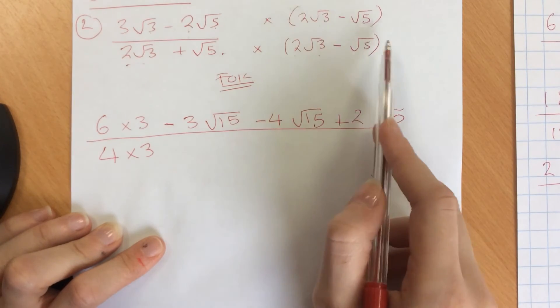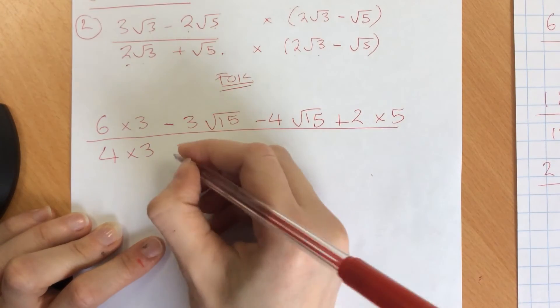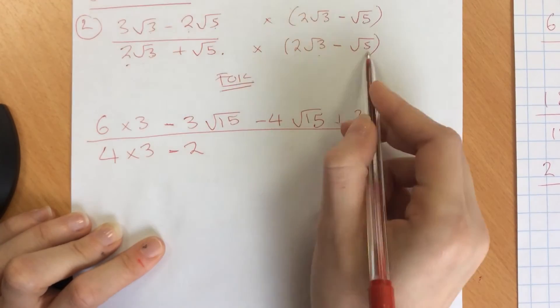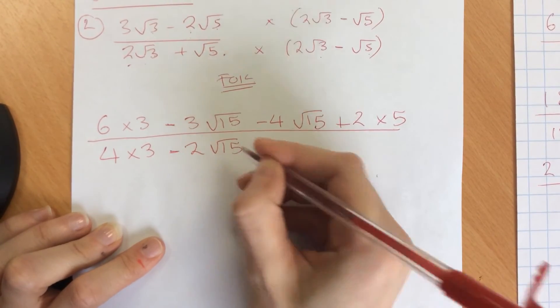Outside, 2 root 3 times minus root 5 gives me minus 2. Root 3 times root 5 gives me root 15.